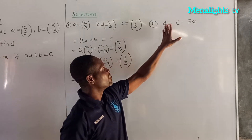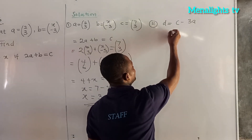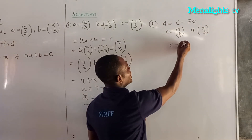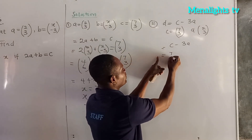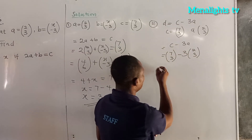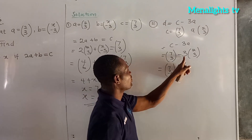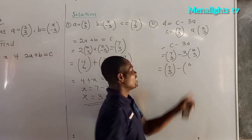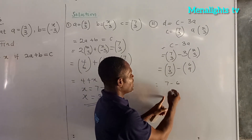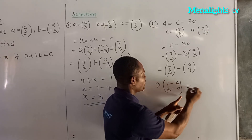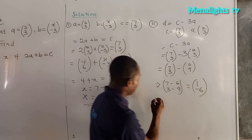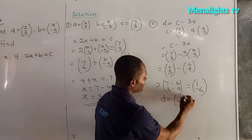Now we have to find the value of d, where d is equal to c minus 3a. We know that c is equal to (7, 3) and a is (2, 3). So we have c minus 3a: that is (7, 3) minus 3 times (2, 3). So 3 times 2 gives us 6 and 3 times 3 gives us 9. So we have 7 minus 6 and 3 minus 9. That gives us 1 and negative 6. Therefore the value of d is equal to (1, -6).